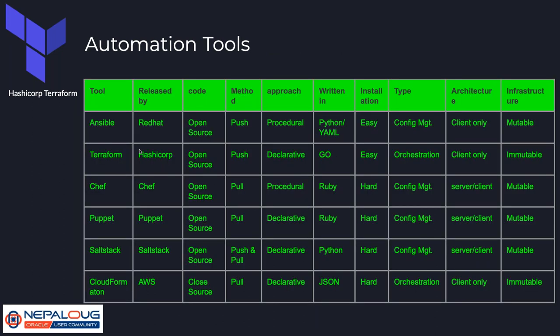There are a number of automation tools in the market: Ansible, Terraform, Chef, Puppet, Salt Stack, and CloudFormation. Terraform is a tool developed by HashiCorp. The code is open source, meaning you can get the source code of Terraform itself. It uses a push method, so no agent or additional software is required at the cloud end — you just install Terraform on your server and it pushes configuration to the cloud.